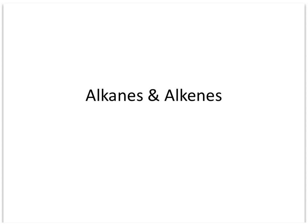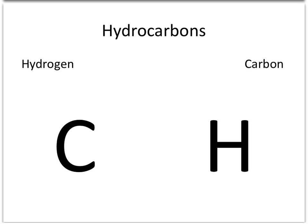In this video, we're going to be looking at alkanes and alkenes. Both alkanes and alkenes are hydrocarbons. Hydrocarbons are compounds made of only two elements. If you're not certain which two elements those are, there's a subtle clue on this slide.